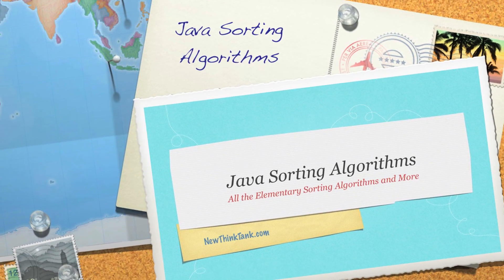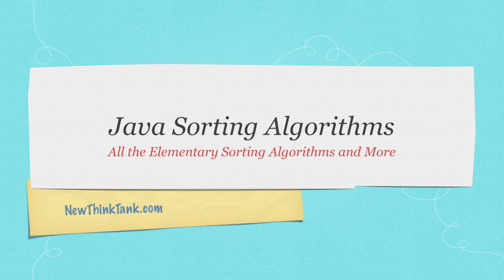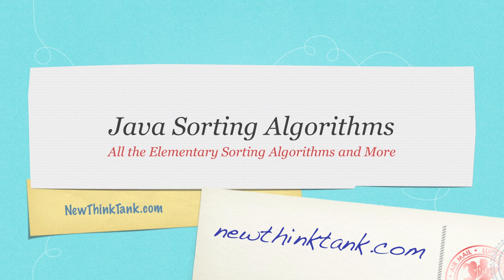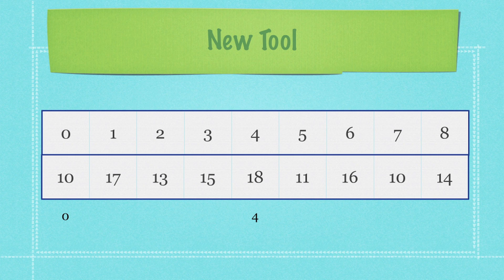Welcome to part two of my Java Algorithms tutorial. Today we're going to talk about all of the elementary sorting algorithms, two different search algorithms, and a whole ton of different things. I've written a method to make everything much more interactive — arrays will be displayed in a horizontal format so you can see the indexes and how they move as the algorithms process information.